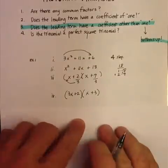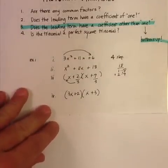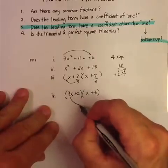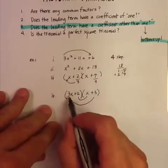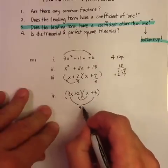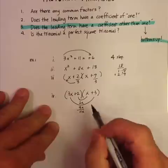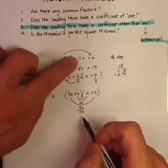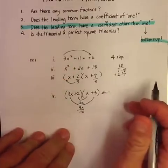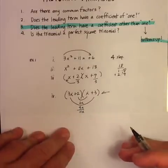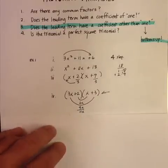Now how do you know that's your answer? You do the smiley-face check. 3x times 3 is 9x. 2x times 2 is 2x. And it adds up to 11x in the original problem. So this is your factored form, and this works every single time.